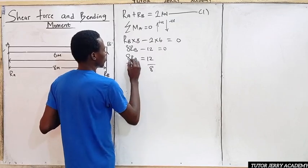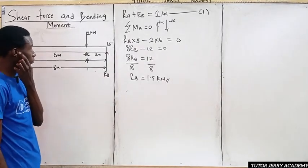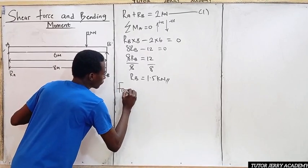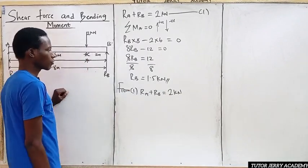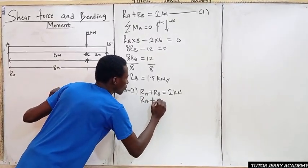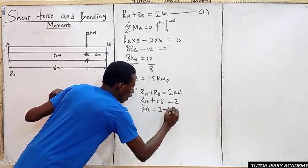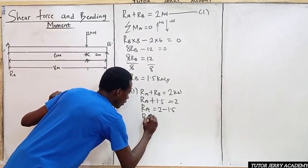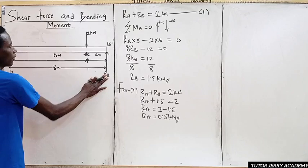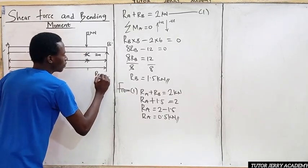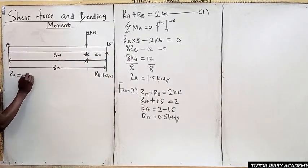This gives us Rb equals 1.5 kilonewtons. From Equation 1, Ra plus Rb equals 2 kilonewtons. Substituting Rb: Ra plus 1.5 equals 2. Taking 1.5 to the other side, Ra equals 2 minus 1.5, which is 0.5 kilonewtons. So Ra is 0.5 kN and Rb is 1.5 kN.